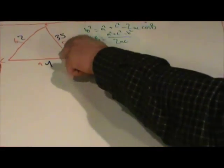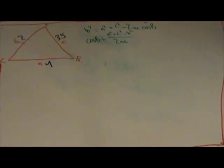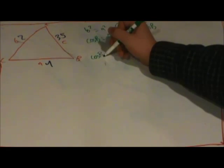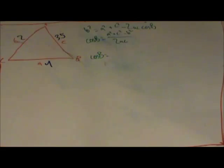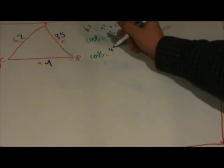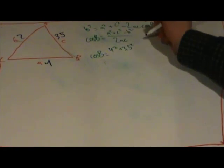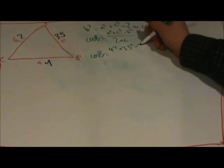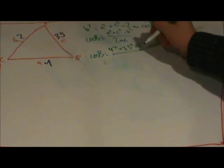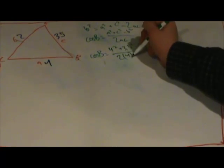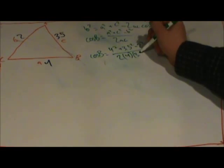And that is the formula that we're going to use because we're trying to solve for angle b here. So to plug in the numbers here, we'll do cosine b equals 4 squared plus 3.5 squared minus 2 squared over 2 times 4 times 3.5.